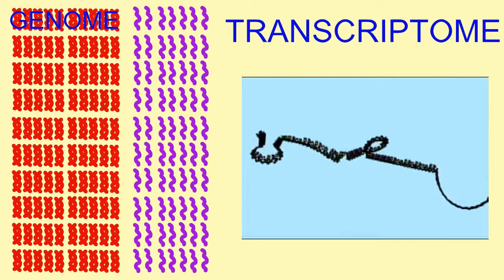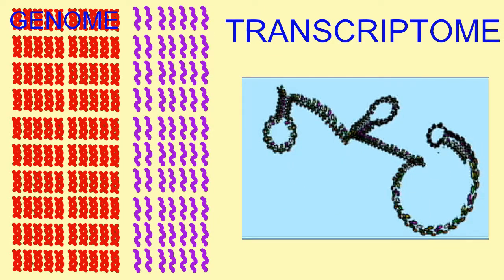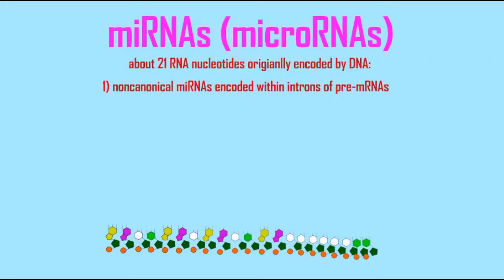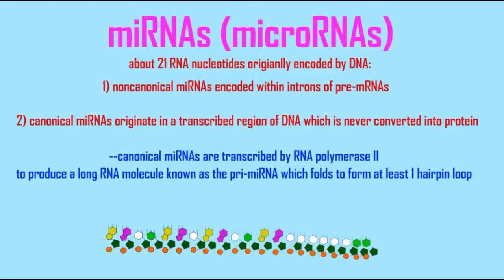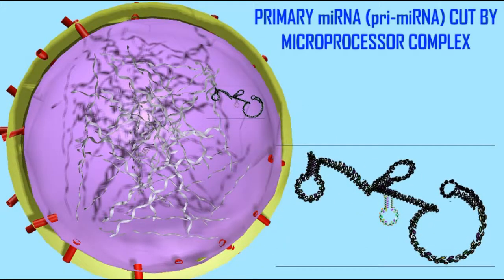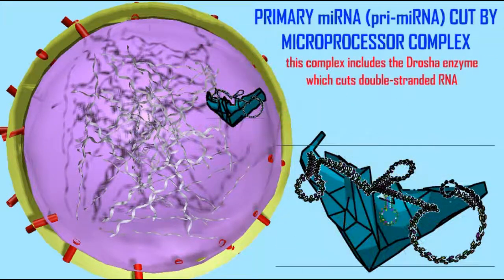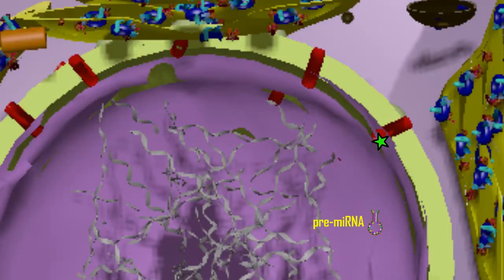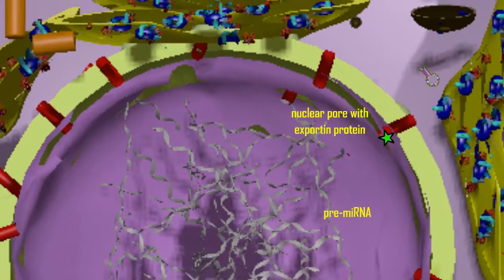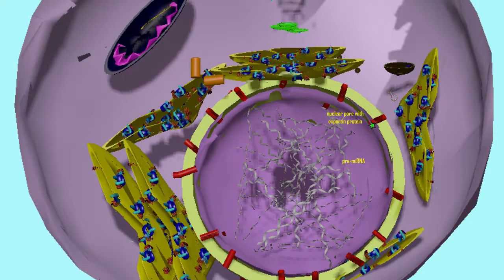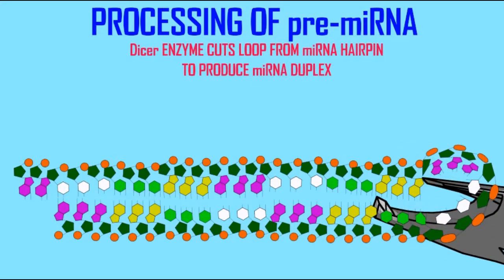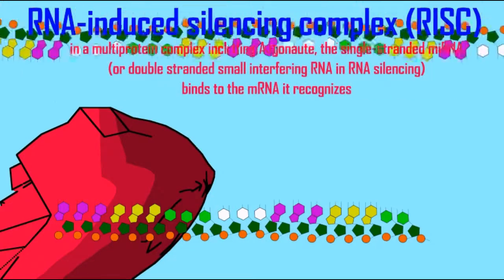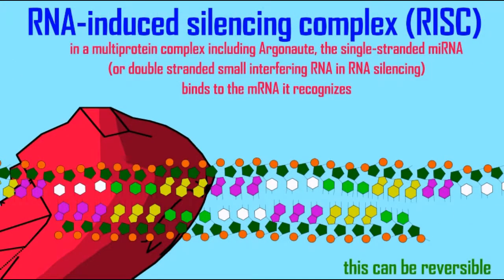This transcriptome includes a number of RNAs which are functional as the final product — they do not become proteins. These include the microRNAs. MicroRNAs can bind to the mRNAs for protein-coding genes and silence them by inhibiting their translation or by causing their degradation.